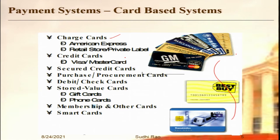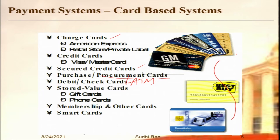Then we have credit cards — the two most popular brands being Visa and Mastercard. There is also a secured credit card, not very popular in India, but in the West, especially among less affluent customers wanting to prove their creditworthiness, a secured credit card is issued against an amount of money kept in balance — so you can only charge up to that amount, almost like a debit card. Then there are purchase cards or procurement cards, also called corporate cards, which can only be used for corporate purchases and travel. Then debit cards, also called check cards or ATM cards.